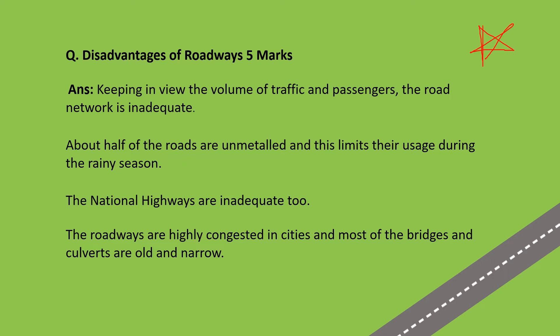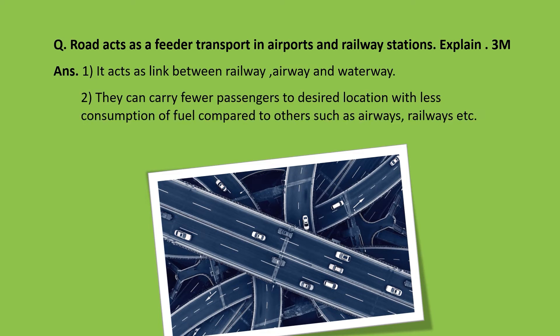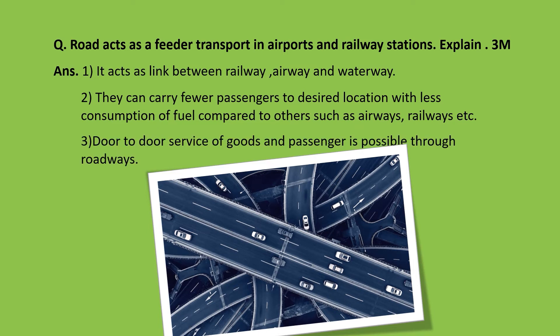Traffic in cities like Bangalore is extremely congested, and roads are not well maintained for the rainy season — so those are five points for the five-marker. Another important question: road acts as feeder transport to airports and railway stations (three marker). It acts as a link between railways, airways, and waterways. Roads carry fewer passengers to desired locations with less fuel consumption compared to other modes of transport. Door-to-door service of goods and passengers is possible through roadways.